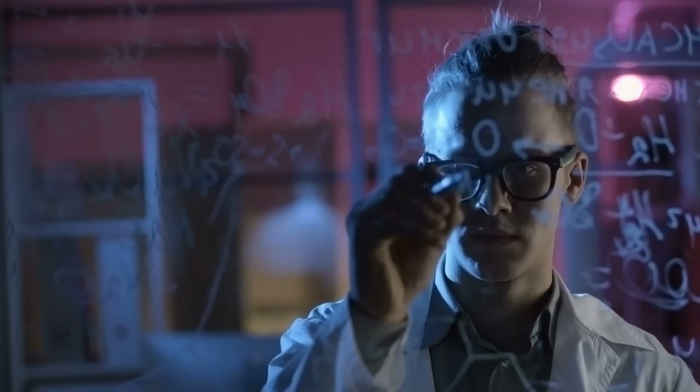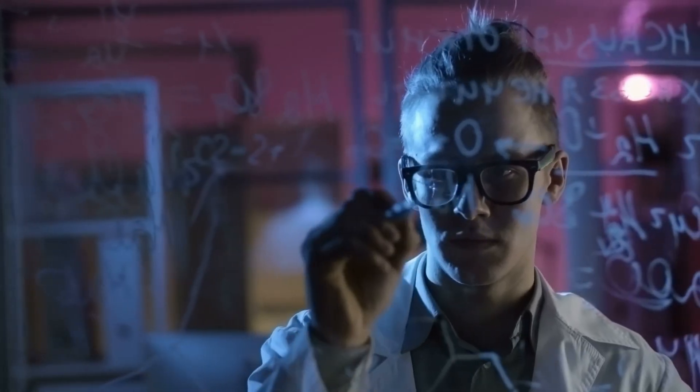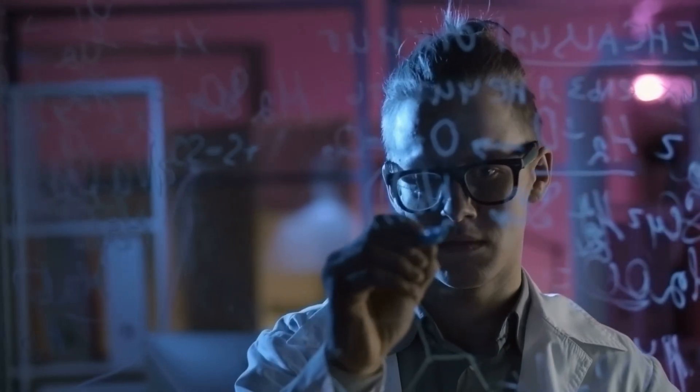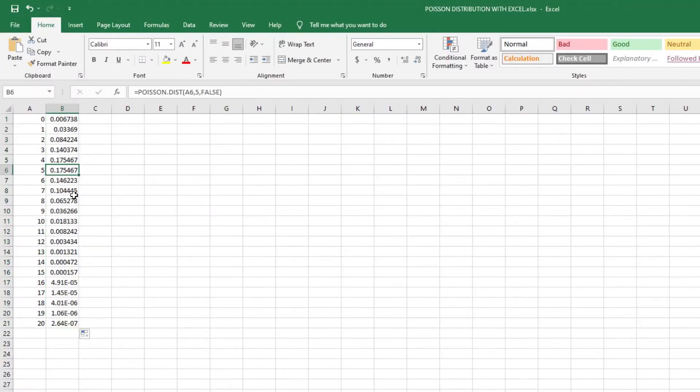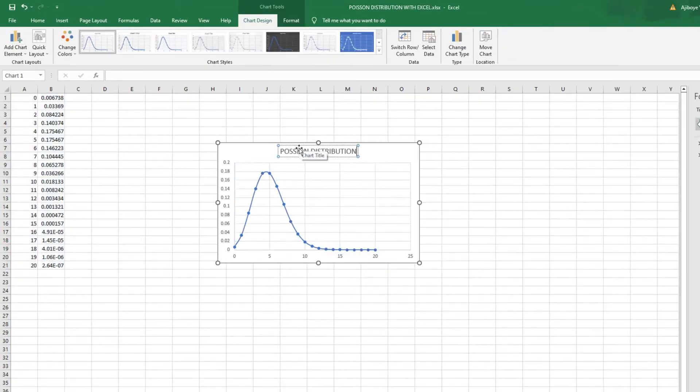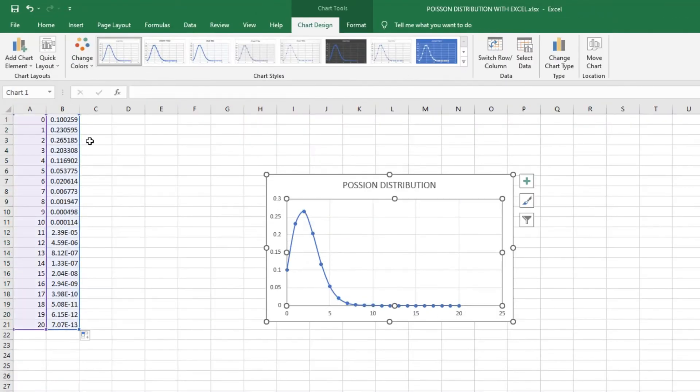Hi everyone and welcome to another YouTube video. In today's video, we are going to be talking about the Poisson distribution. We will define the mathematical equation that defines this type of probability distribution, talk about the expected value and variance of this distribution, give examples of real-life scenarios that follow a Poisson distribution, and use Microsoft Excel to see how we can model a Poisson distribution. So without further ado, let's start learning.